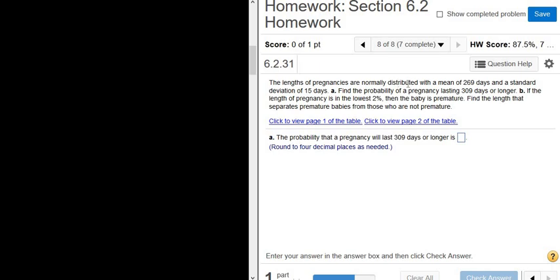The lengths of pregnancies are normally distributed with a mean of 269 days - that's going to be our mu, so mu is 269 - and a standard deviation of 15 days, that's sigma. So we have two questions.